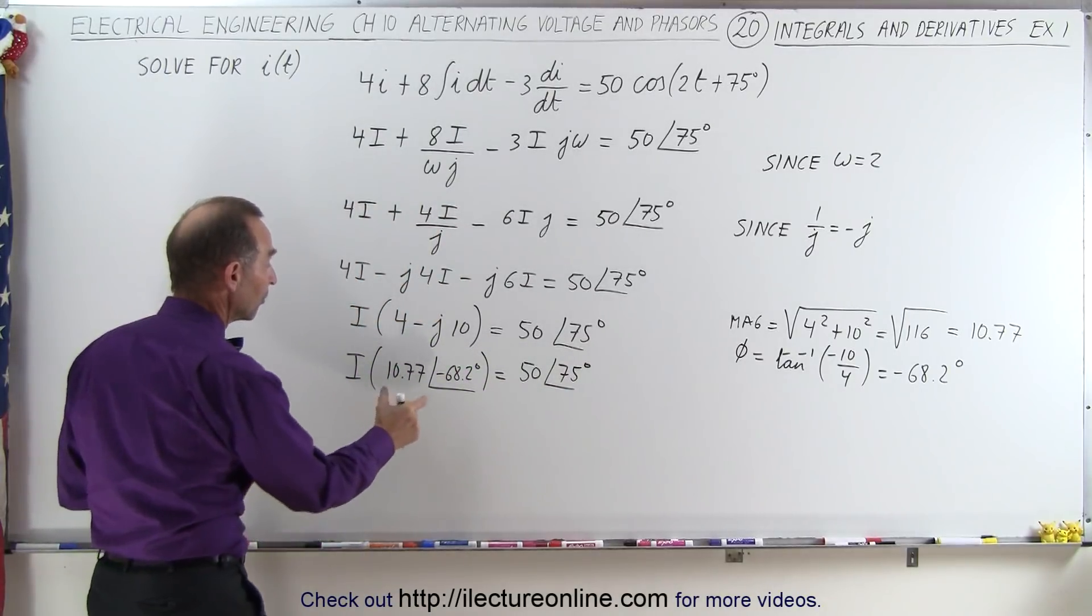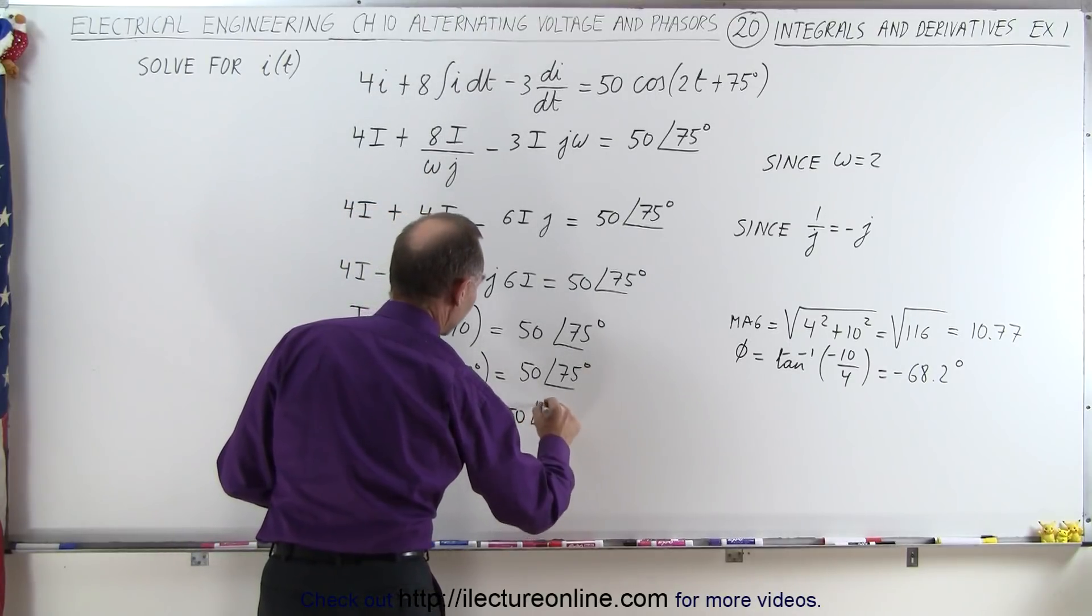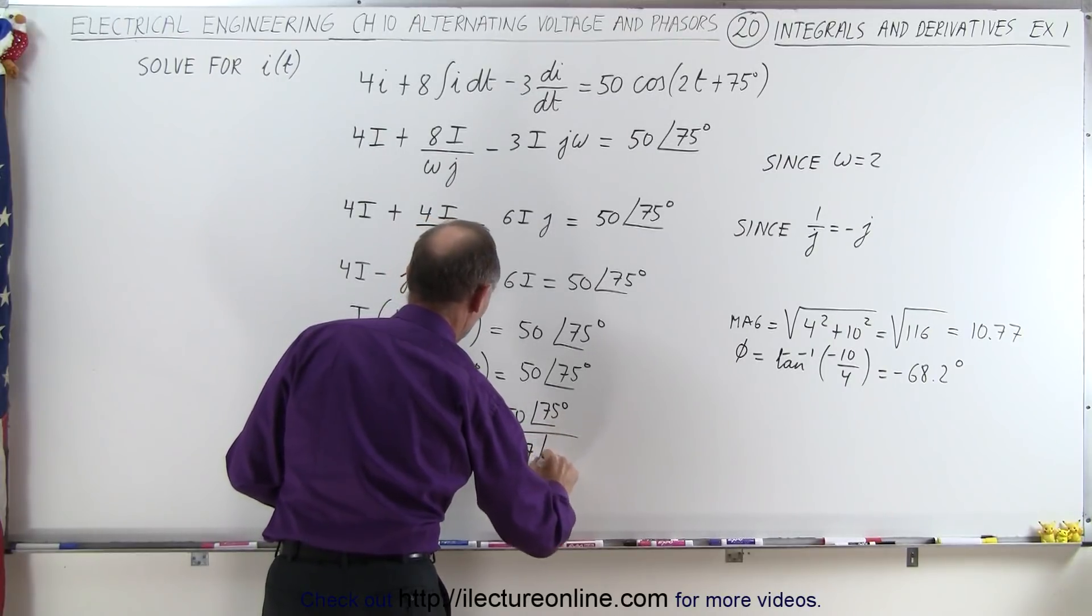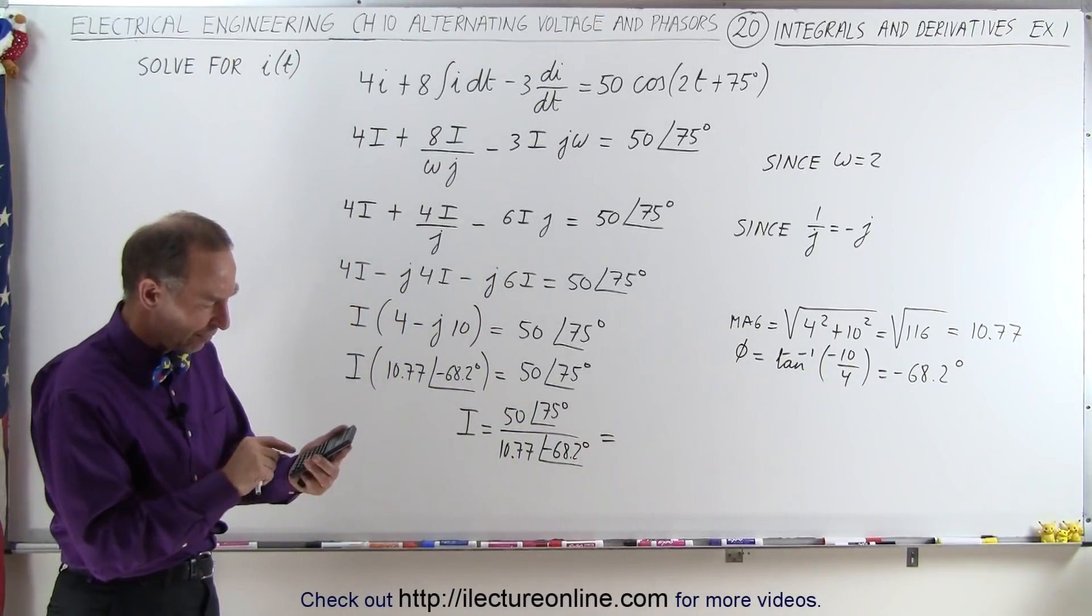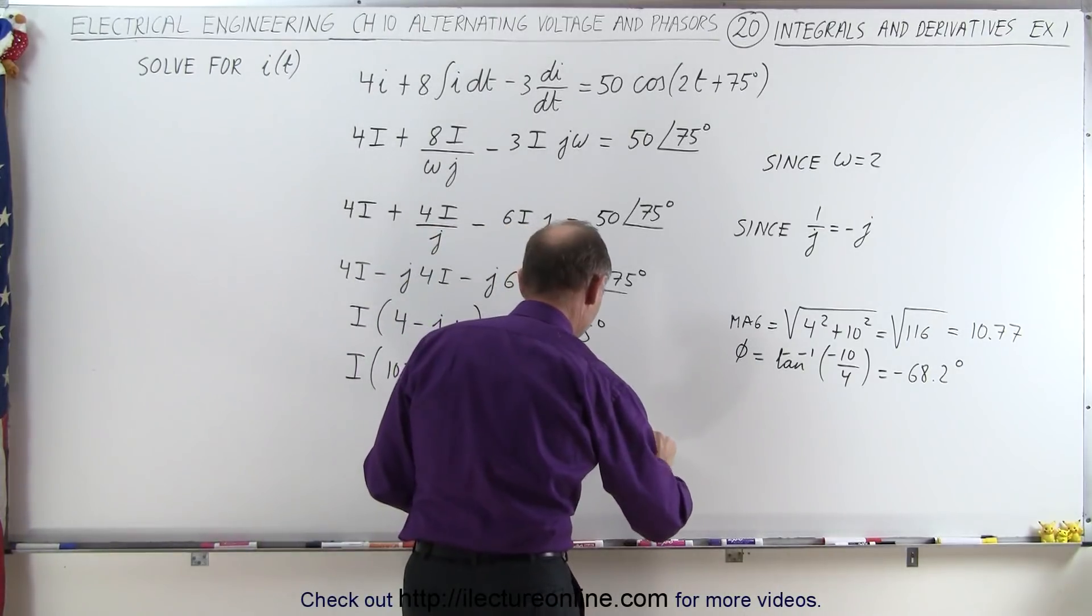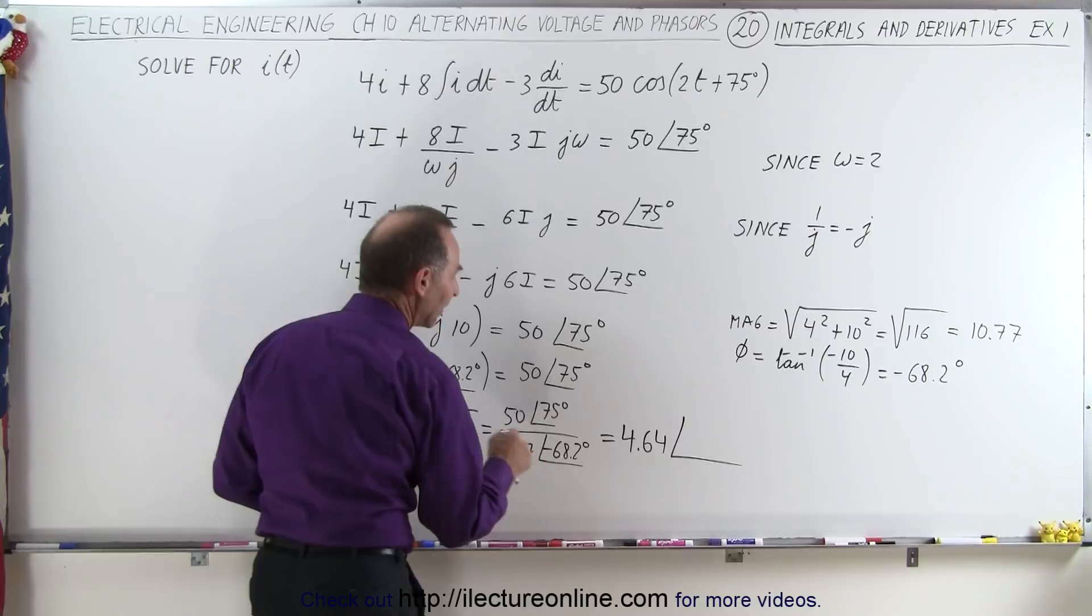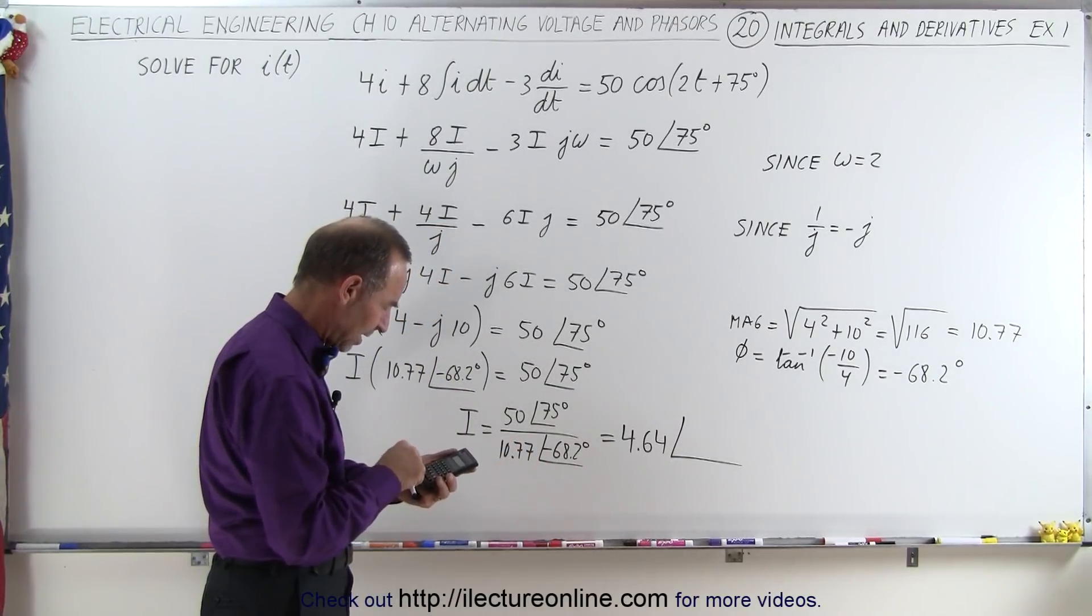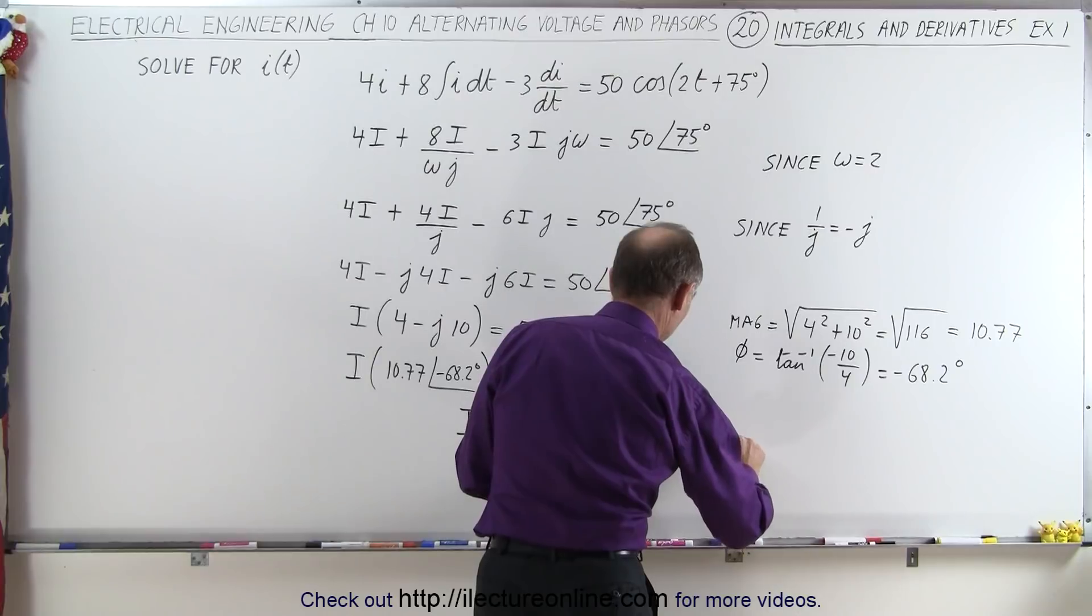So now to solve for i, we're going to divide both sides by this quantity right here. So i is equal to 50 with a phase angle of 75 degrees, divided by 10.77, with a phase angle of minus 68.2 degrees, which is going to be equal to, now we take 50, divided by 10.77, which gives us 4.64, and a phase angle of 75 minus a minus 68. So that would be 75 plus 68, 68.2, that gives us 143.2 degrees.